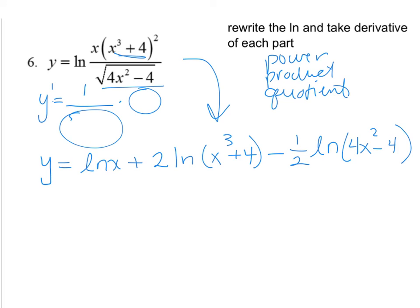Take a look at that and how I rewrote it. Because now the next step is to find the derivative. So this is 1 over x plus 2 over x to the third plus 4 times 3x squared minus. And then I have the 2 in the bottom. And so this is 4x squared minus 4 times the derivative, which is 8x.